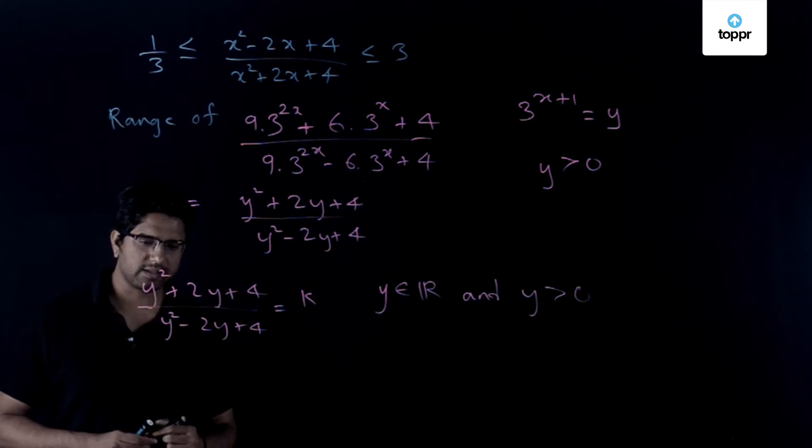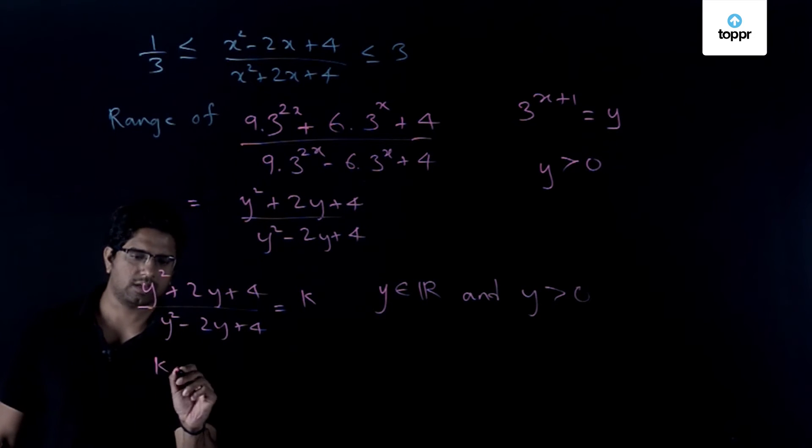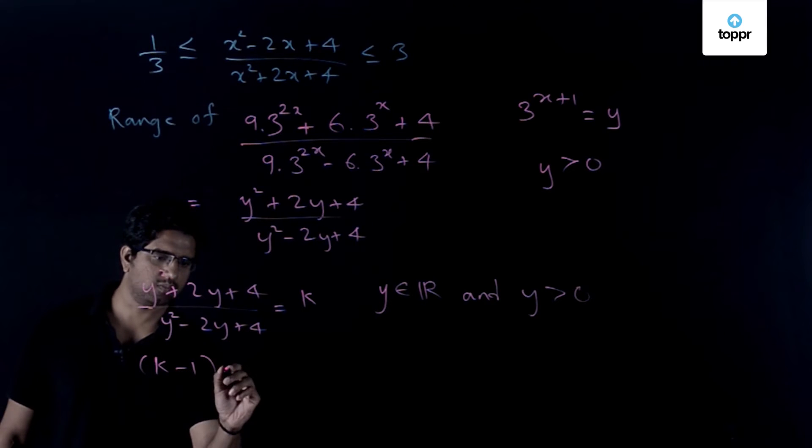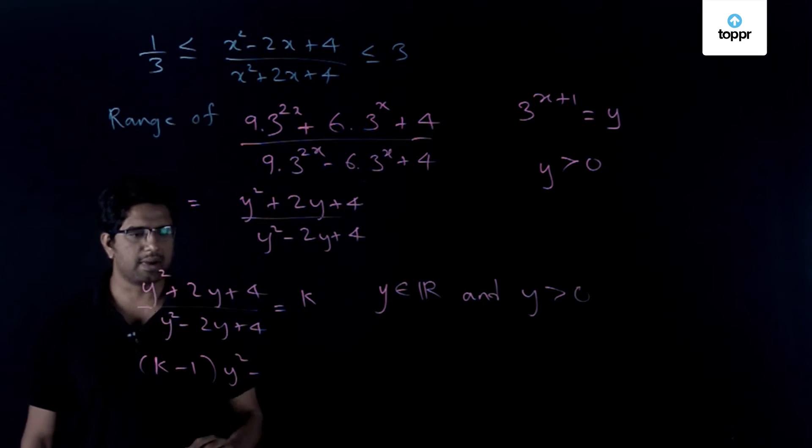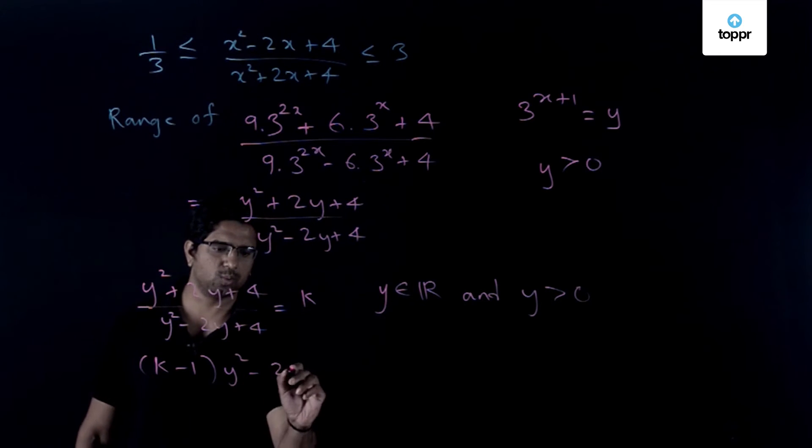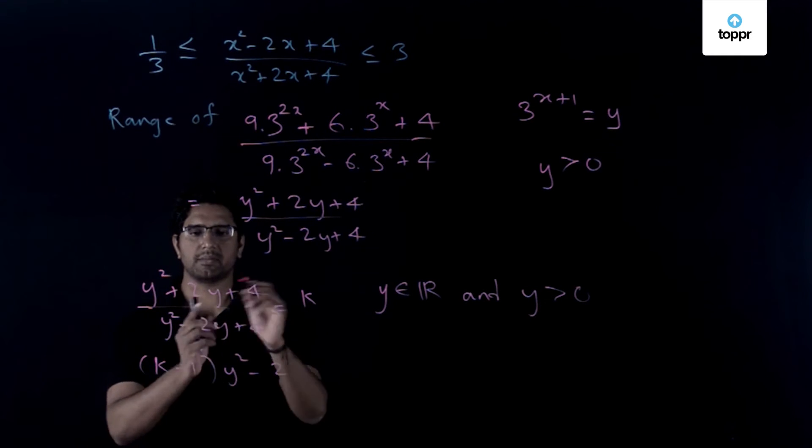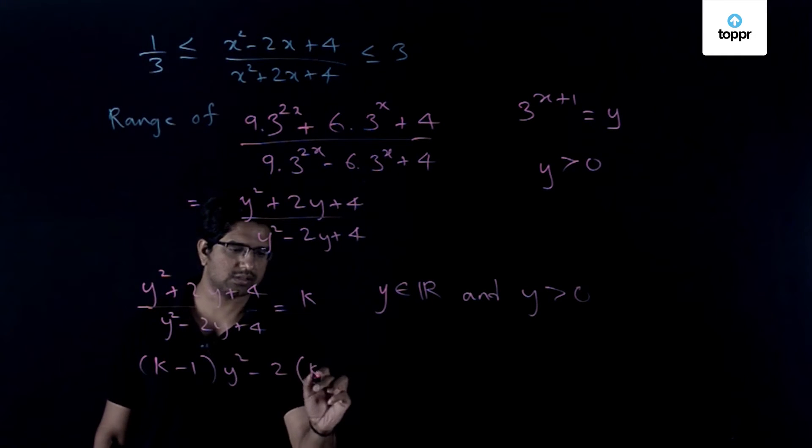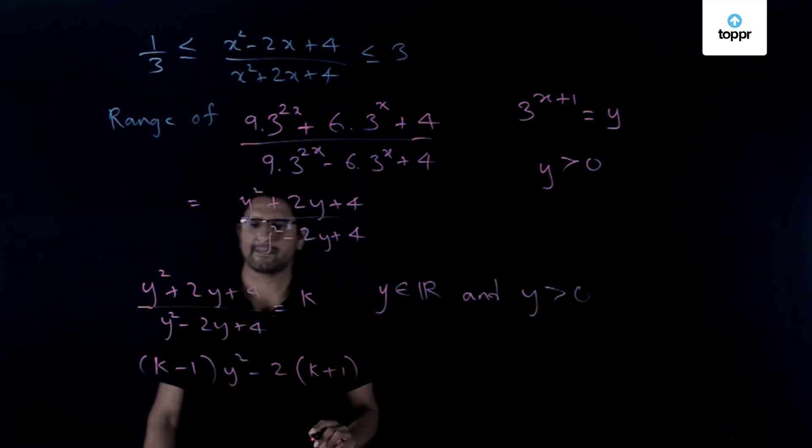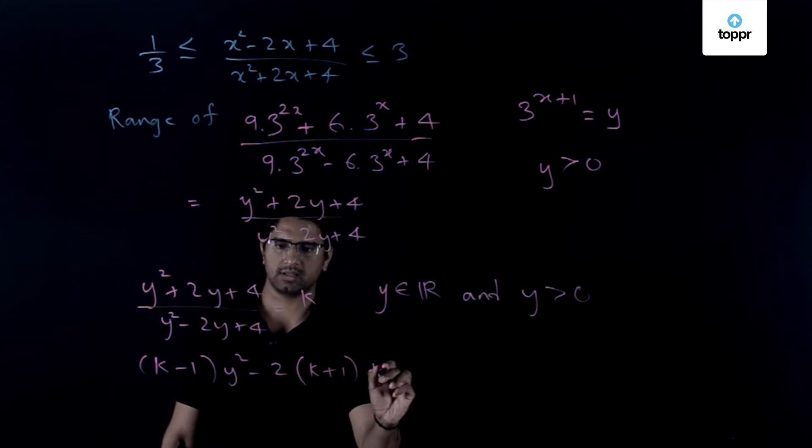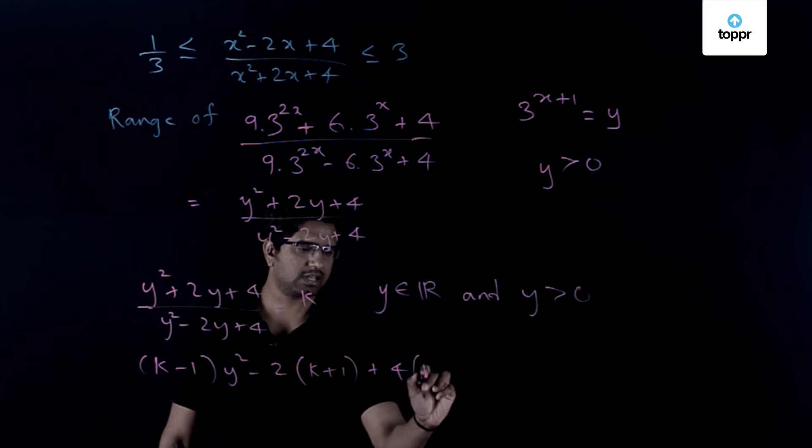On cross multiplying this we get (k - 1) times y² - 2 times, so we have -2k - 2 which can be -2 times (k + 1) and +4 times (k - 1).